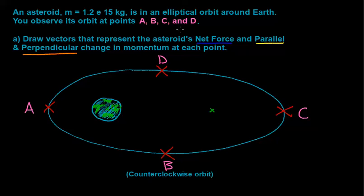We have a problem where an asteroid of mass 1.2 times 10 to the 15th kilograms is in an elliptical orbit around Earth. We observe its orbit at points A, B, C, and D on this ellipse.